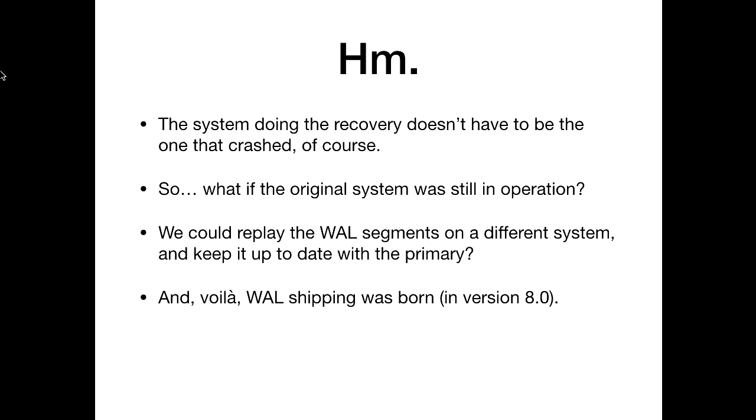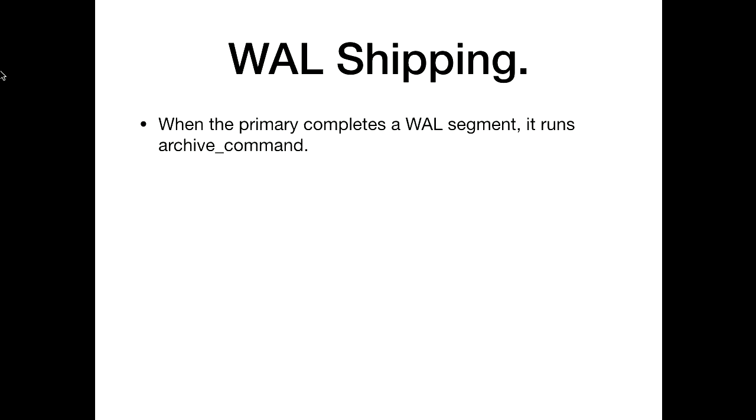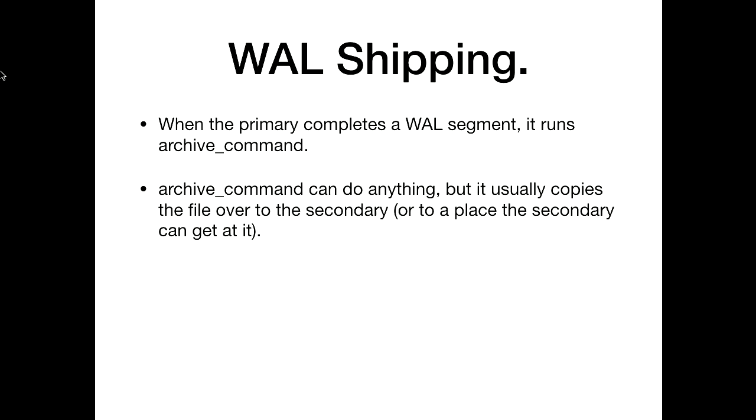The way WAL shipping works is: these 16-megabyte files — every time one's done, meaning it's full or there was a checkpoint or you call a function to force it — it runs a command called archive_command, configured in postgresql.conf. Archive_command can do anything it wants, but really there's only one thing it should do: take that WAL segment and copy it to a different place where the secondary machine can get at it. This could be S3, a shared disk, or lots of places — the only rule is the secondary needs to be able to get at it.